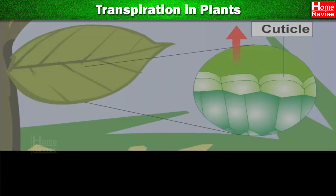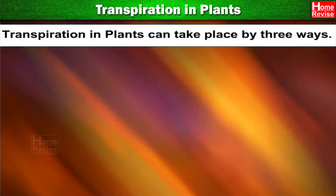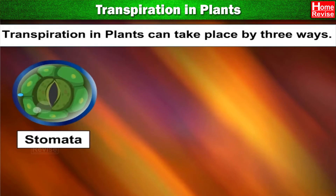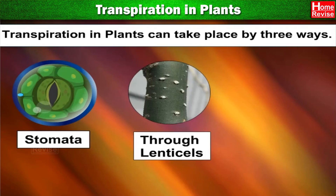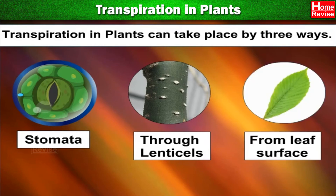We can conclude that transpiration in plants can be done by three types: first, through stomata; second, through lenticels; and third, from the leaf surface.